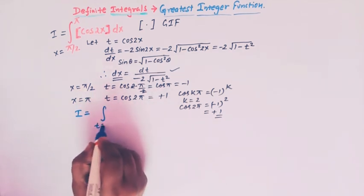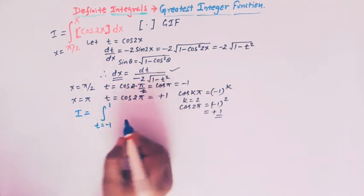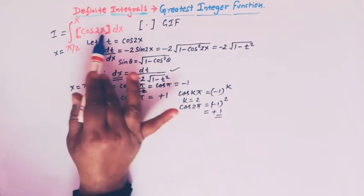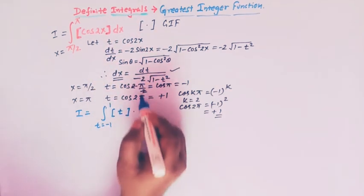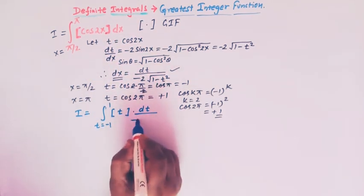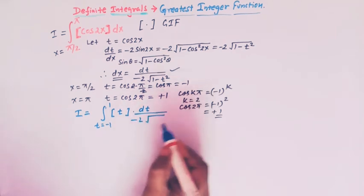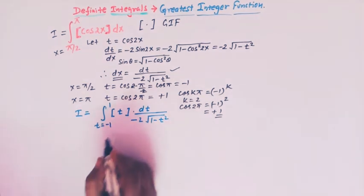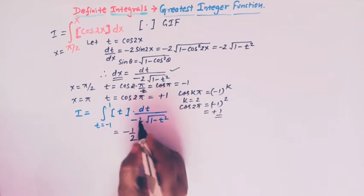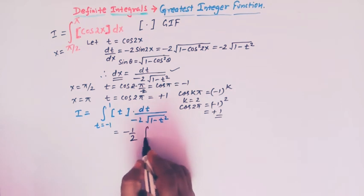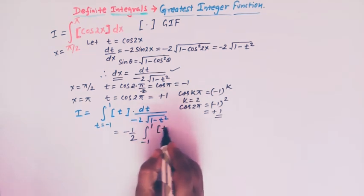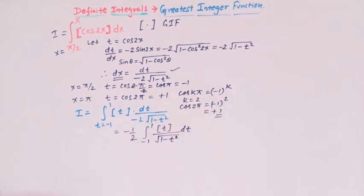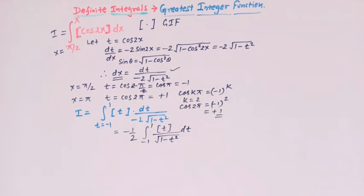We can now rewrite the integral I as the integral from t = −1 to 1 of ⌊t⌋ (greatest integer of t, since cos2x = t) times dt/(−2√(1 − t²)). Simplifying by taking −1/2 outside, we have I = −(1/2) ∫₋₁¹ ⌊t⌋ / √(1 − t²) dt.